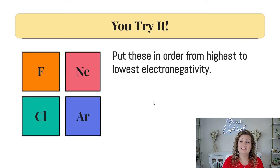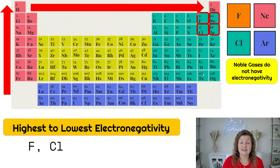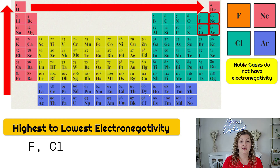Go ahead and put these in order from highest to lowest electronegativity — go ahead and pause. Let's check out the answer. This one was kind of tricky. In all truth, fluorine is still the highest, and then chlorine after that. Neon and argon are both noble gases, and the noble gases do not have electronegativity, so I didn't even add them. That's just a little food for thought, because they do throw in some noble gases on tests and quizzes, so don't be fooled by that.